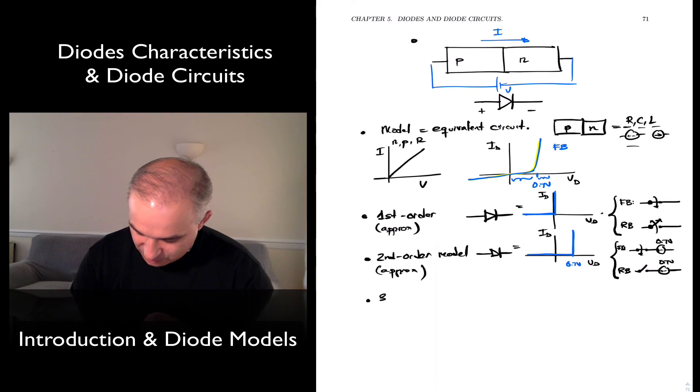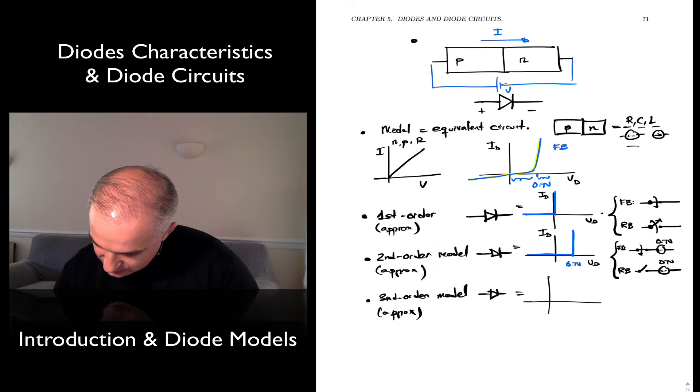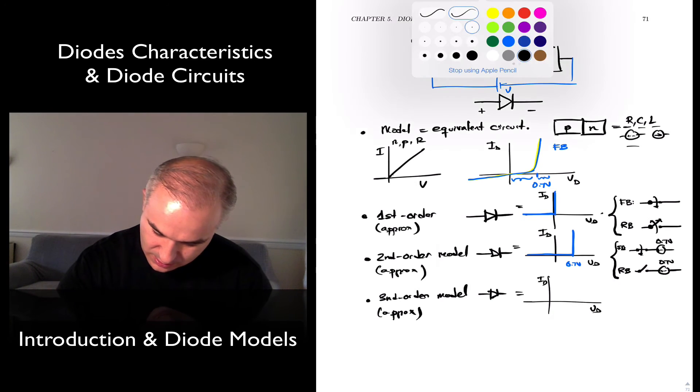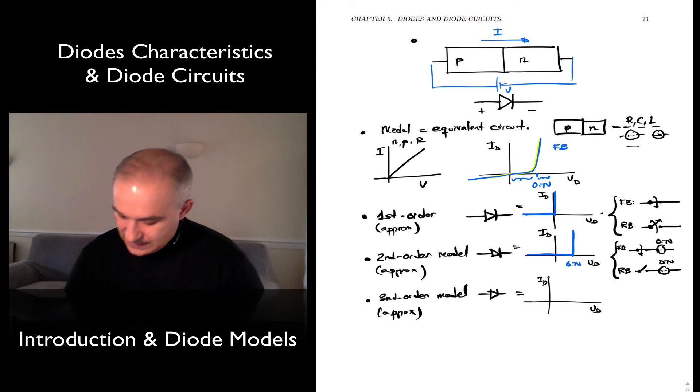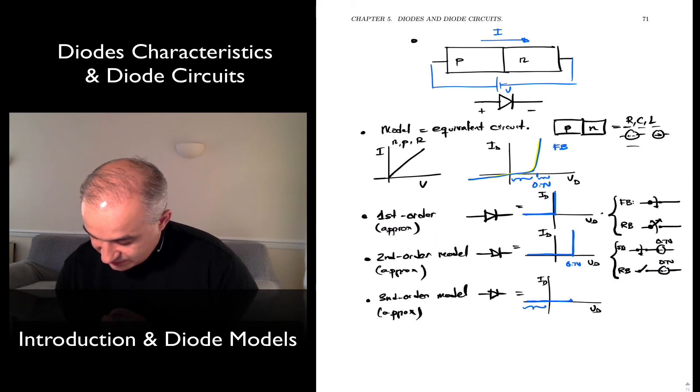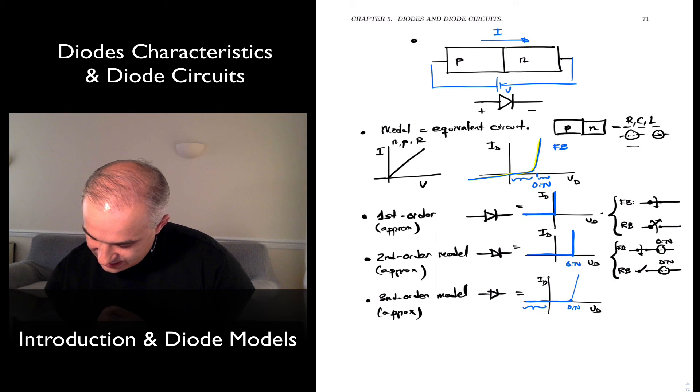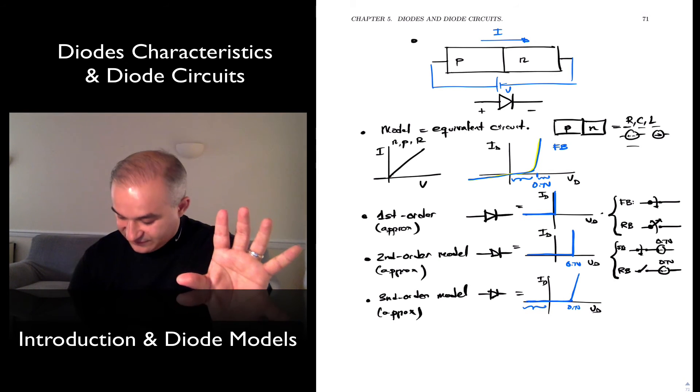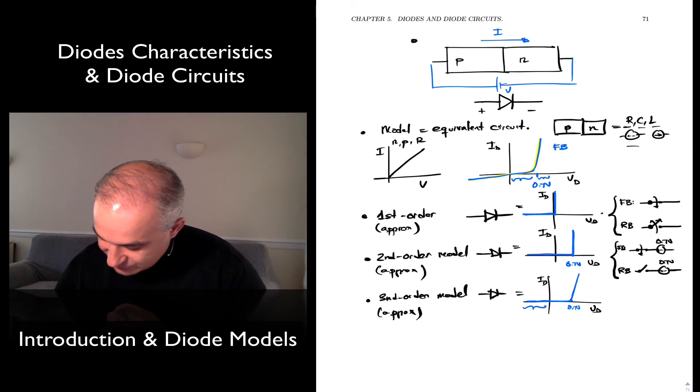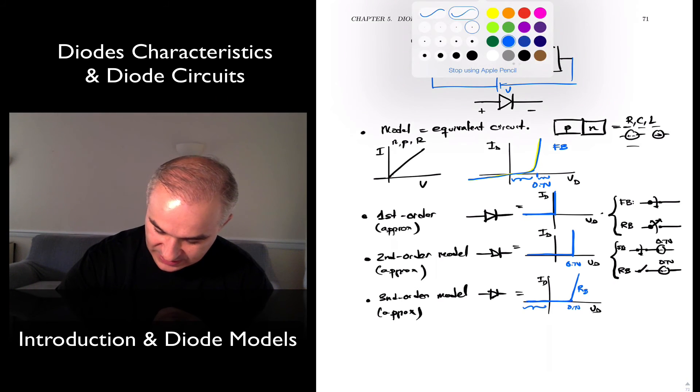We could be even more accurate, a third-order model, a third-order approximation. Our diode is equivalent to no current in the reverse bias. No current up to 0.7 volts, so it's an open circuit. And then, we get an increased current after 0.7 volts, where this is really like a resistive behavior, a low resistive behavior - let's call this the bulk resistance.